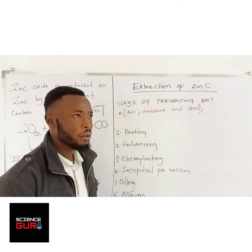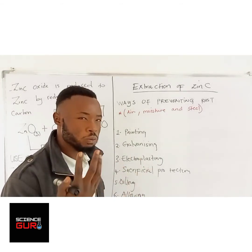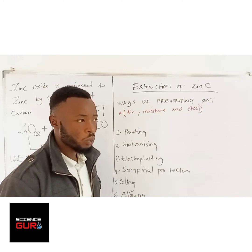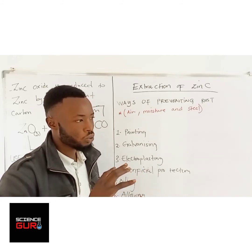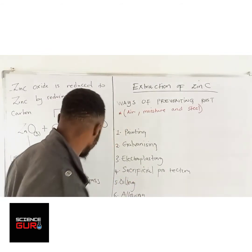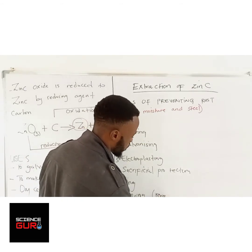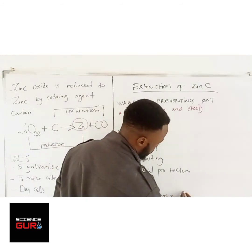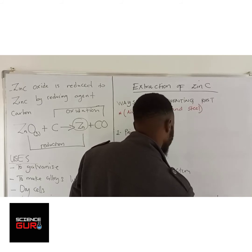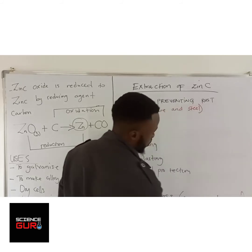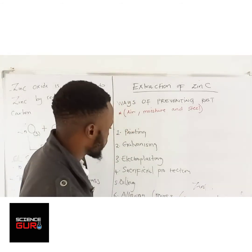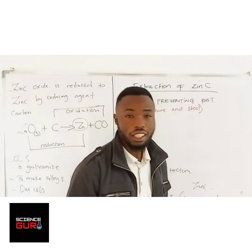An alloy is a mixture of two or more metals. Why do you alloy? Sometimes when you make an alloy of a metal, it becomes stronger. For example, brass is a mixture of copper and zinc, and it is stronger than zinc alone.